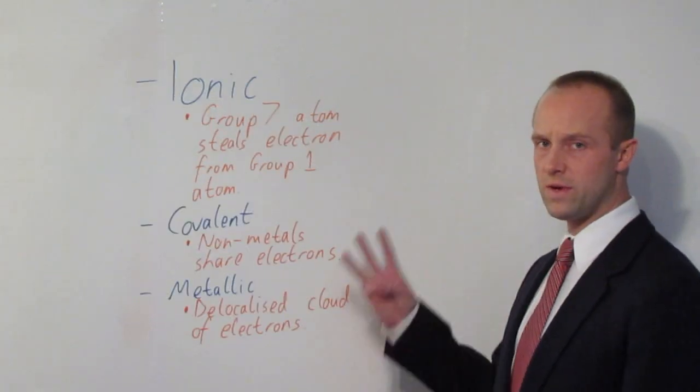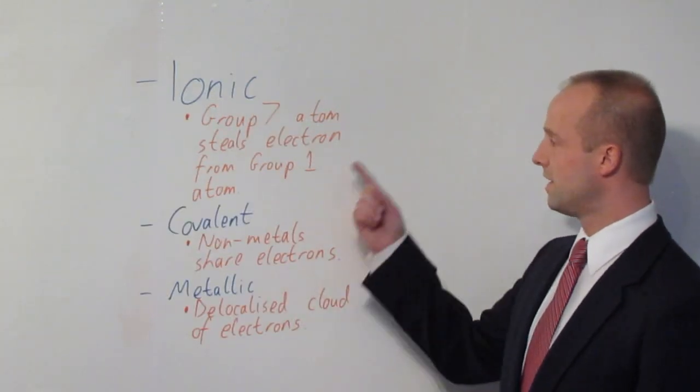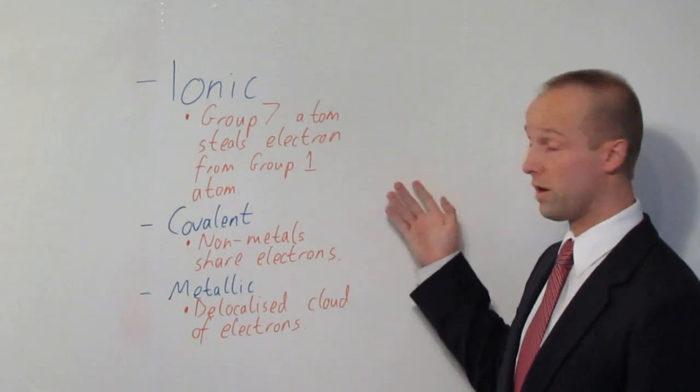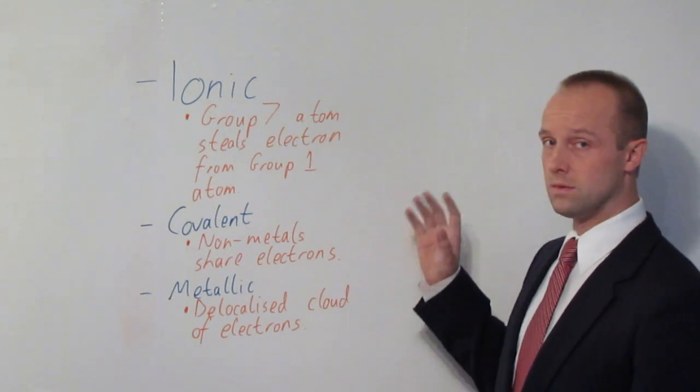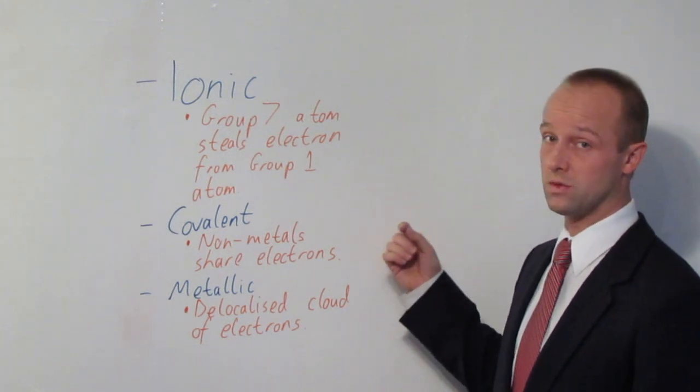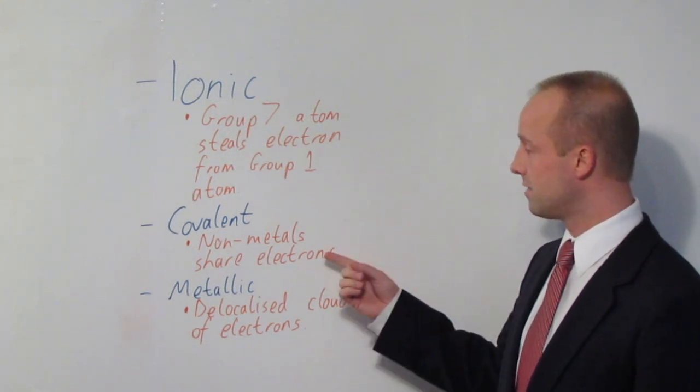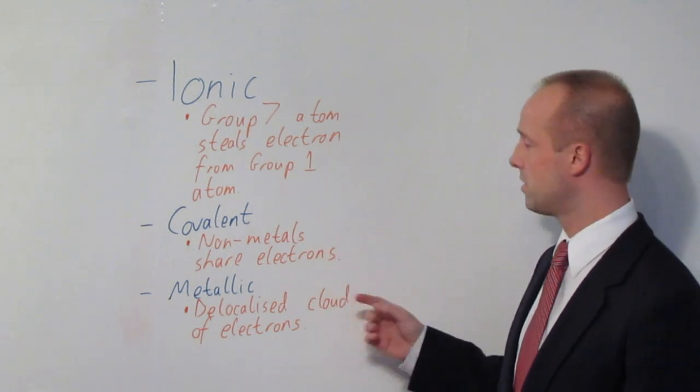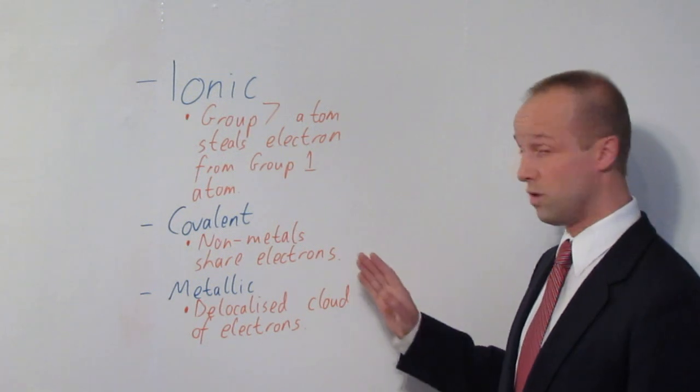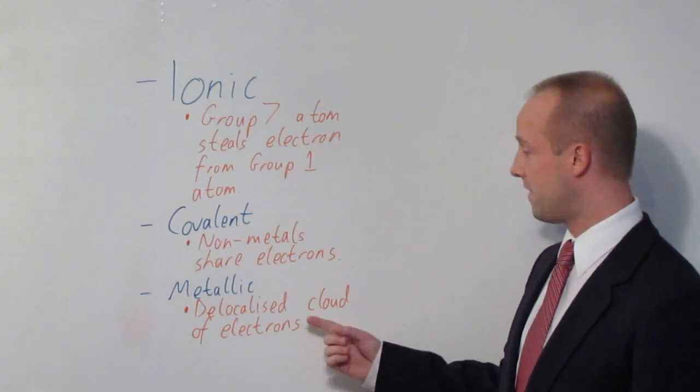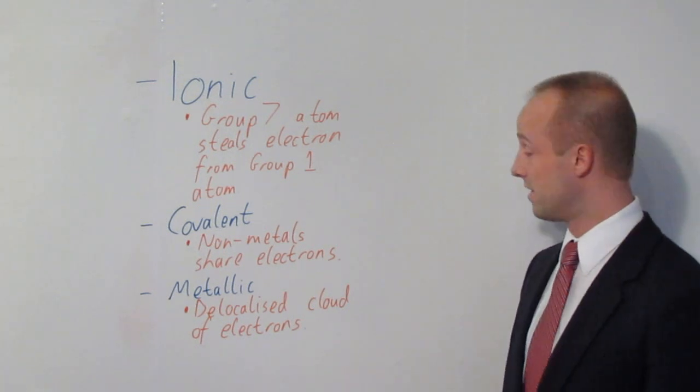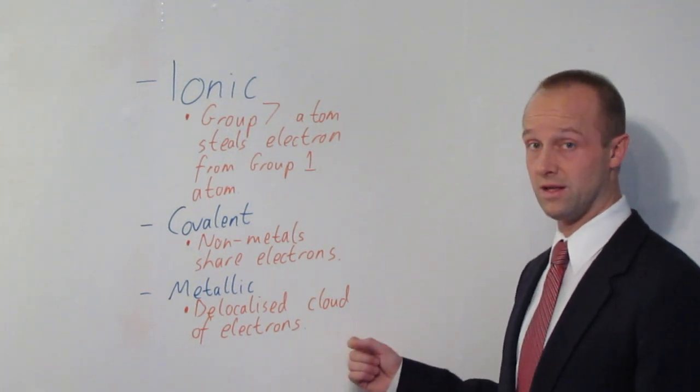So in summary, the three types of bonding which you need to know about: Ionic bonds, which is where a group 7 atom steals an electron from a group 1 atom. High melting points, that's soluble in water and then they'll conduct once they're dissolved. Covalent bonds, relatively low melting points. It's where non-metals are just sharing electrons, but rubbish electrical conductors.